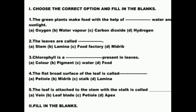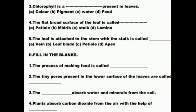Now we are going to check your answers. Roman I: Choose the correct answer. Question 1: The green plants make food with the help of dash, water and sunlight — answer: carbon dioxide, CO2. Question 2: The leaves are called dash — answer: food factory. Question 3: Chlorophyll is a dash present in leaves — answer: pigment. Question 4: The flat broad surface of the leaf is called dash — answer: leaf lamina. Question 5: The leaf is attached to the stem with the stalk called dash — answer: petiole.